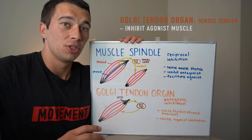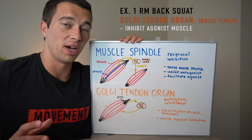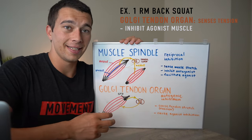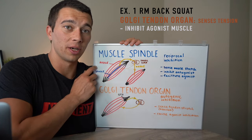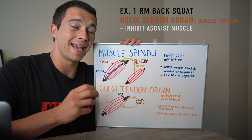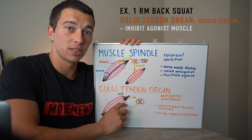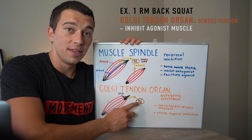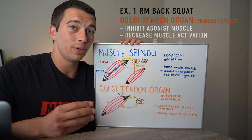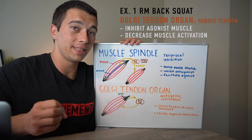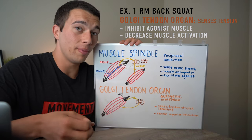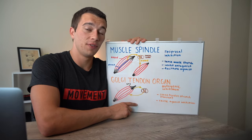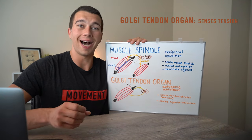The Golgi tendon organ senses tension in the tendon that can come from a forceful muscle contraction or a prolonged stretch. For example, in a one-rep-max back squat we're putting a lot of force through the quads and a lot of tension through the patellar tendon — firing the Golgi tendon organs. As we send that strong tension signal, the spinal cord sends a reflex back to decrease the activation of the quadricep muscle, which actually decreases the amount of weight you can lift because it's protecting the muscle from putting too much tension through the tendon — causing agonist inhibition.